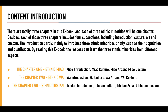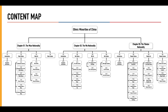Each of those three chapters includes four subsections, including introduction, culture, art, and custom. The introduction part is mainly to introduce the three ethnic minorities briefly, such as their population and distribution. By reading this ebook, the readers can learn about the three ethnic minorities from different aspects. This is the content map, which includes all the content in the ebook.